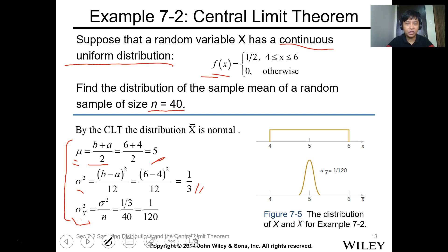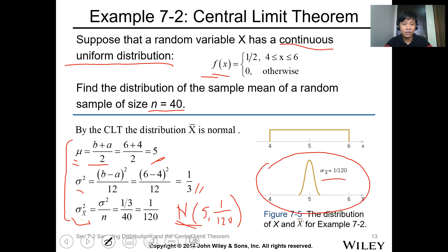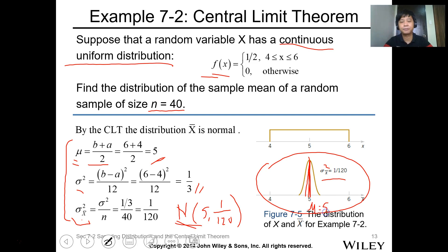So the distribution follows a normal distribution N with mean value of 5 and variance of 1/120, or equivalently standard deviation of 1 over square root of 120. The representation shows the variance and mean value equal to 5. This means you have a normal distribution for your sample mean.